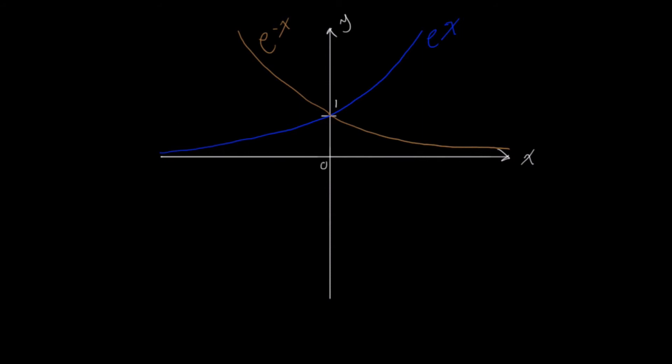What about one-half e to the negative x? One-half e to the negative x is just a vertical compression. So we're going down by a factor of 0.5. So this is 0.5, and this is one-half e to the negative x.